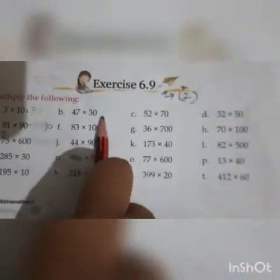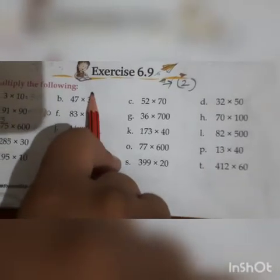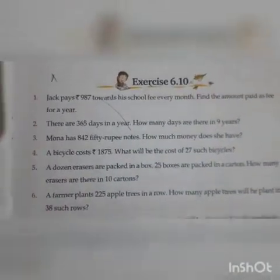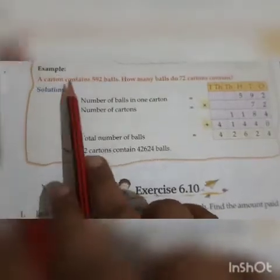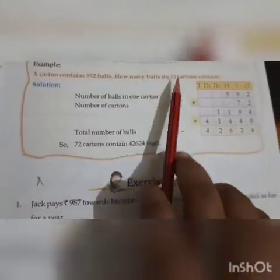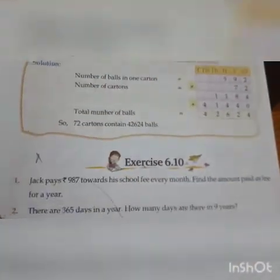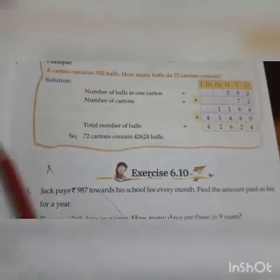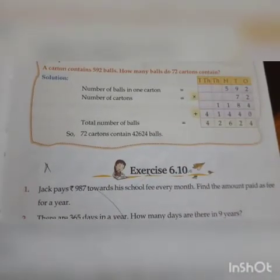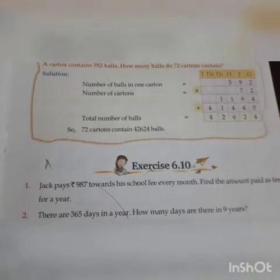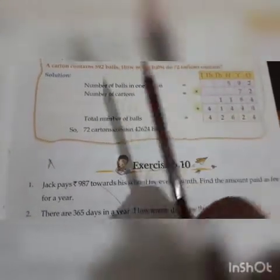So you have to do this exercise. First skip the zero, multiply the given number, then count zeros and put them. Now come to exercise 6.10. Look at the example: a carton contains 592 balls — how many balls do 72 cartoons contain? Whenever a number or amount is given and we need to find a larger total, we always multiply them.